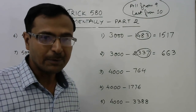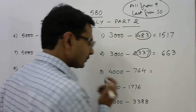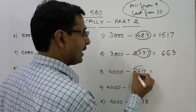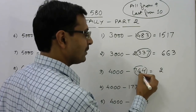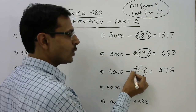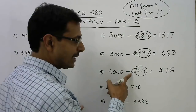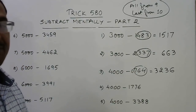Let us see 4000 minus 764. The last three digits are 764. Apply the rule: 9 minus 7 is 2, 9 minus 6 is 3, 10 minus 4 is 6. The leading digit is 0, so we increase 0 by 1 to get 1, and 4 minus 1 is 3. So 3236 is the required difference.